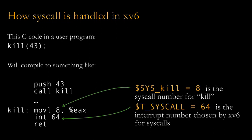You push the argument onto the stack and then run the call command to jump to the label called kill. The function is implemented down here, and what's interesting is that the implementation of this kill system call from the user's perspective is very short. All it really does is move the number 8 into the EAX register — 8 is the system call number for kill. After that, it uses the int instruction, which stands for interrupt, to trigger software interrupt number 64. 64 is another special number chosen by XV6 for system calls.